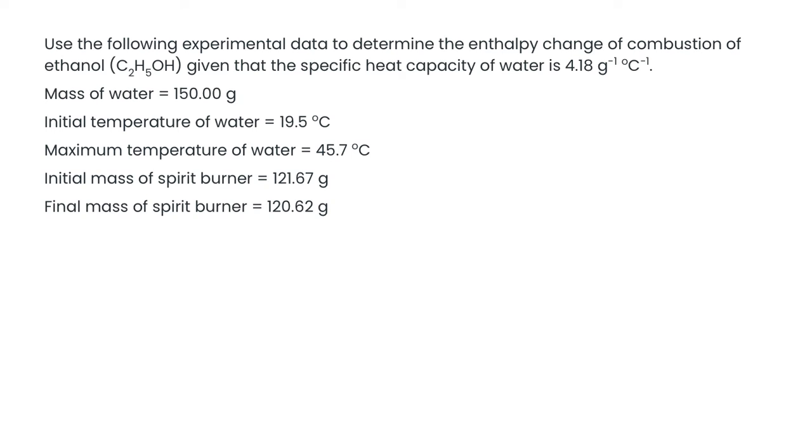So then here's a typical example you might see or data you may get from an experiment. It says here to use the following data to determine the enthalpy change of combustion of ethanol, given the specific heat capacity of water is 4.18. So we've got the mass of the water, we've got the initial and final temperatures of the water, and then we've got the initial and final masses of the spirit burner itself.